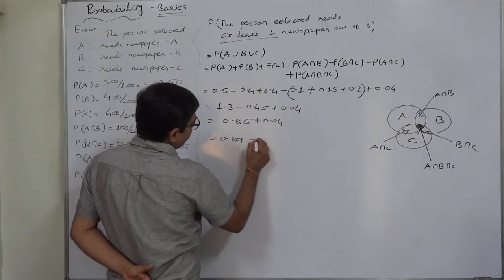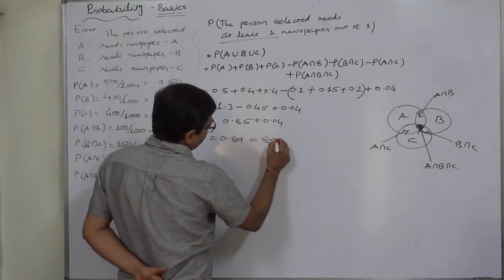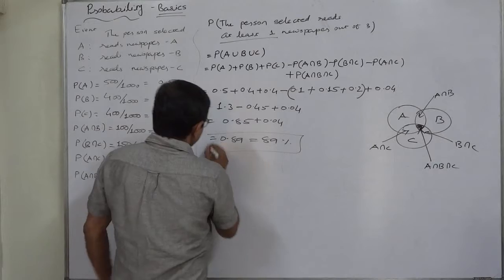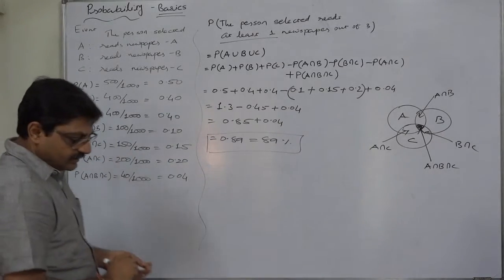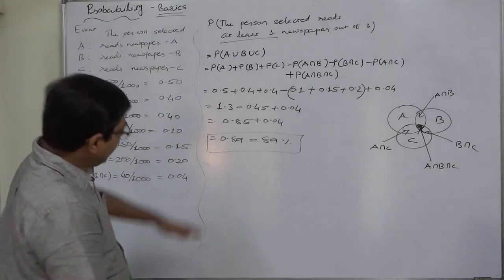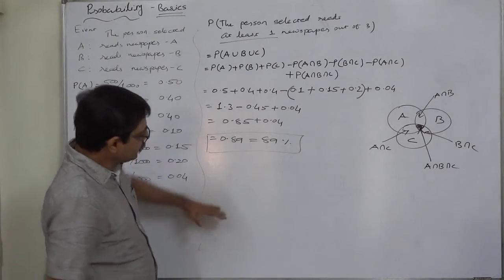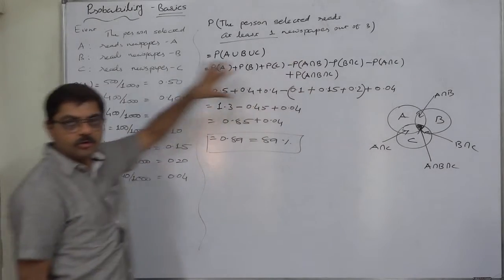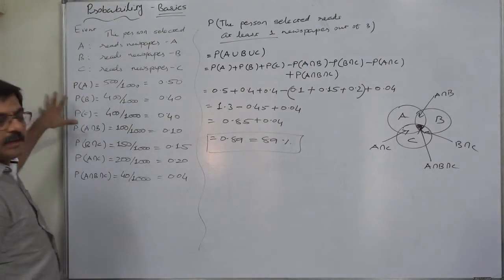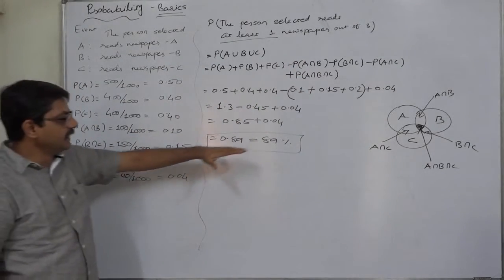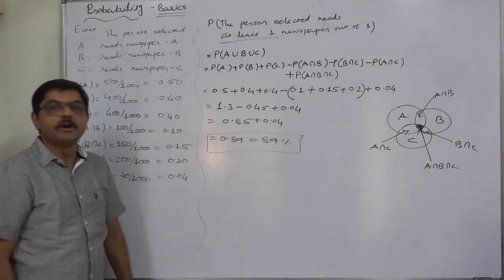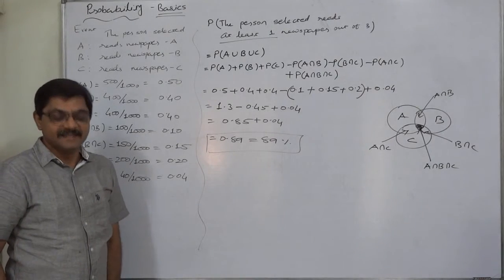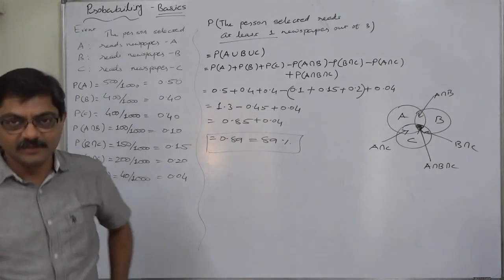So ultimately the probability is 0.89 or 89 percent. The probability that the person selected at random from the locality reads at least one newspaper out of three — A, B and C — comes to 0.89 or 89 percent. That's it. Thank you very much.